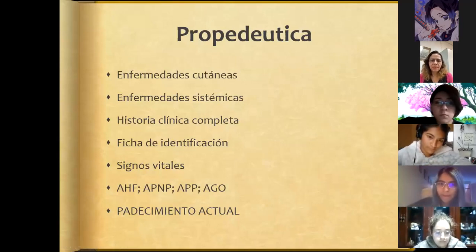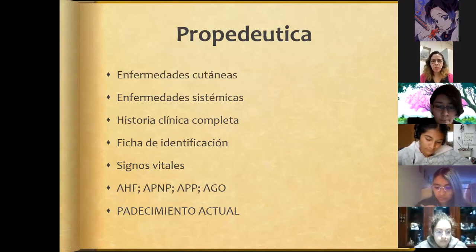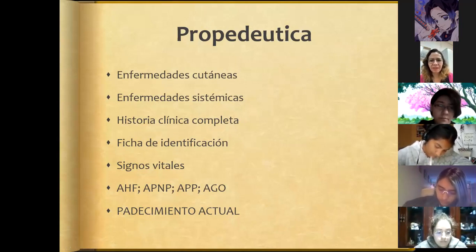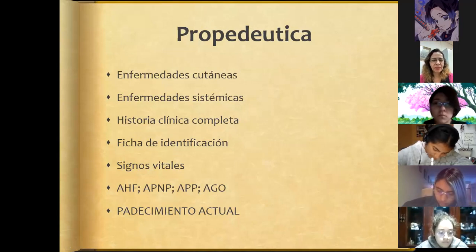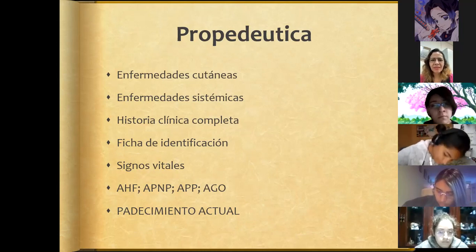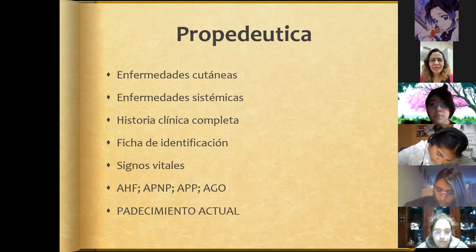We must always remember that, regardless of the specialty or condition our patient has, if they consult us for a skin disease, we need to know if the patient has any systemic disease — that is, if they have diabetes, hypertension, which is most common — so we must focus our diagnosis and treatment on a complete, integral approach. As in any clinical history, we must do a detailed examination and a complete interrogation, starting with the identification data. It is very important to know what our patient does for a living.